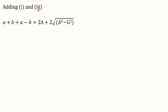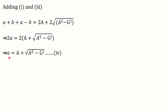Now let's add equation 1 and equation 3. On adding, left hand sides and right hand sides are added. The +b and -b cancel out, leaving 2a on the left hand side. On the right hand side, the factor of 2 can be taken common and then cancelled. So we are left with a = A + √(A² - G²), which is equation 4.